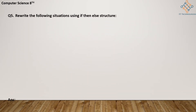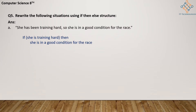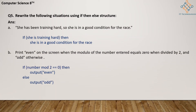Question number 5: rewrite the following situations using the if-then-else structure. First, understand the else structure. The first statement is: 'She has been training hard, so she is in good condition for the race.' Analyzing this statement, the part before the comma is the condition. So: if she is training hard, then she is in good condition for the race. Part B: print 'even' on the screen when the modulo of the number entered equals 0 when divided by 2, and 'odd' otherwise. For an even number, the condition is: if the number is divisible by 2 and the remainder is 0, then it is even.